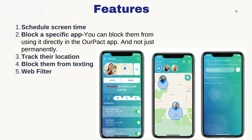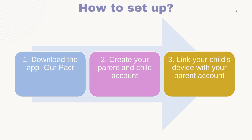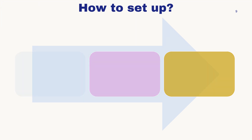OurPact also allows you to track their location and block them from texting. It is very easy to set up — just follow three steps: download the app, create both parent and child accounts, and link both accounts together.